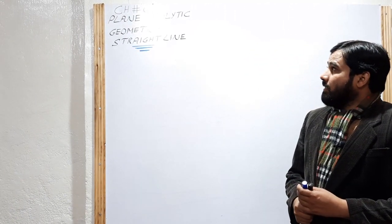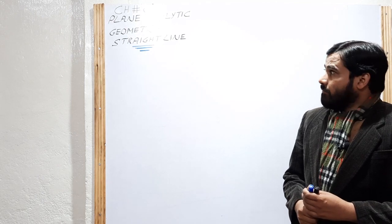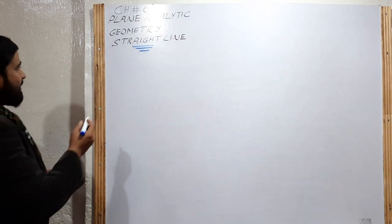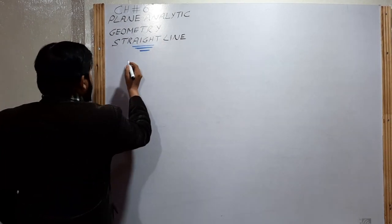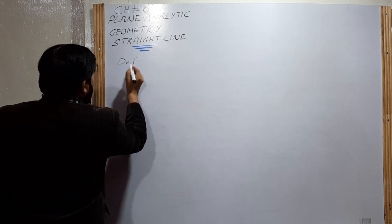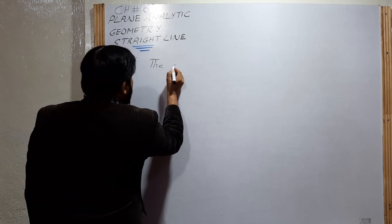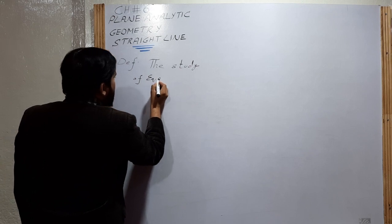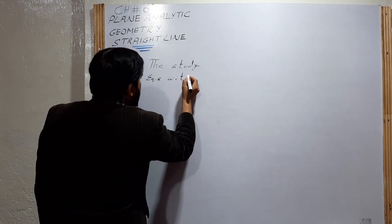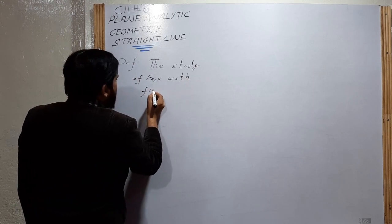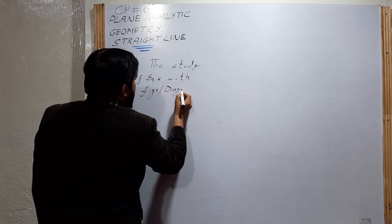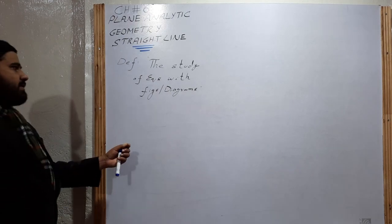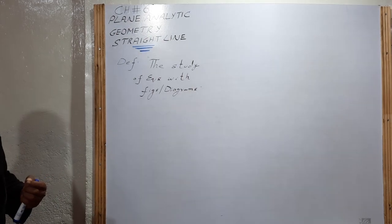First of all, we will define analytic geometry and then we will discuss the formulas related to analytic geometry. The definition of analytic geometry is very simple: the study of equations with figures. Figures are diagrams. Simply, the study of equations when we relate them with diagrams — this is called analytic geometry.